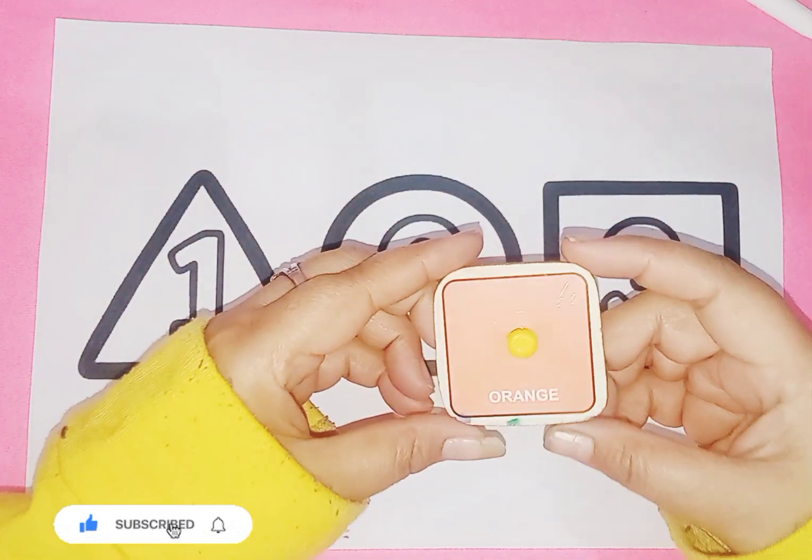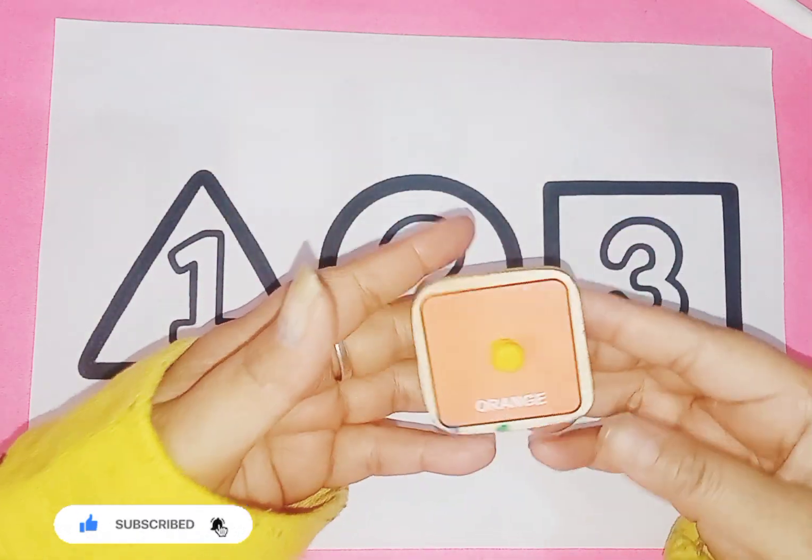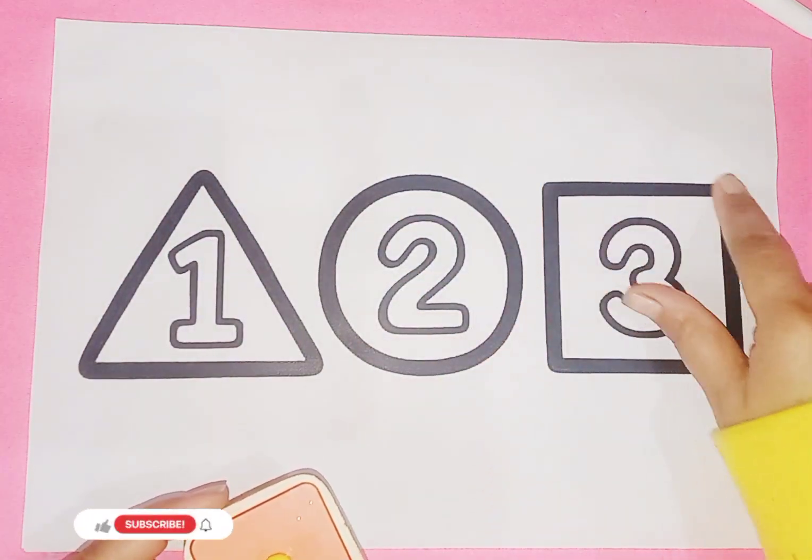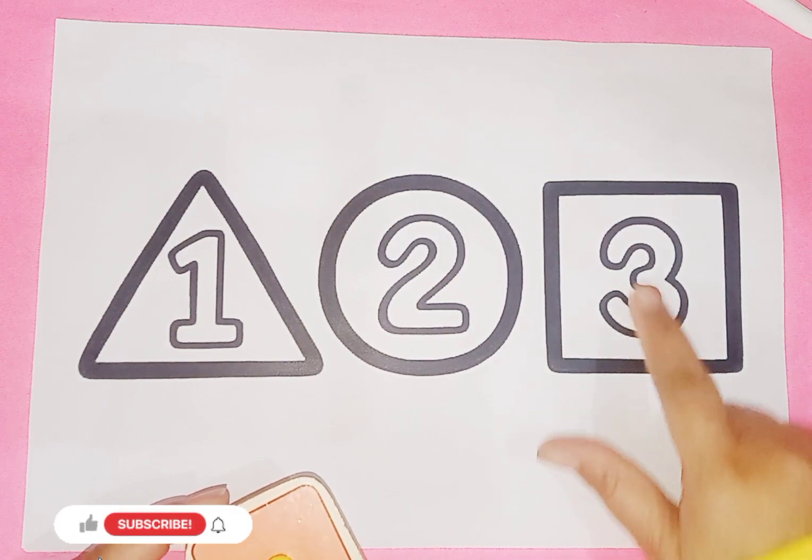Now this is square. Which shape kids? This is square. Square is like this, and number is 3.